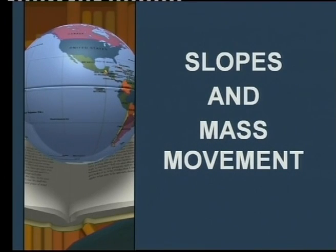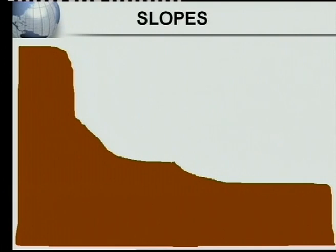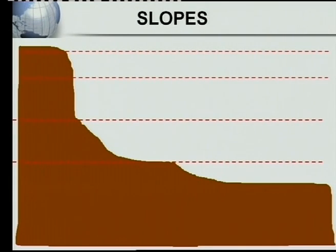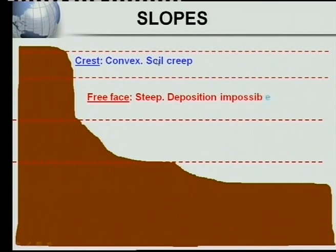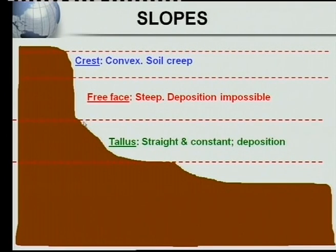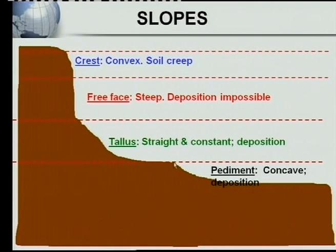Now let's look at slopes and mass movement. A slope can be divided into four different parts. At the very top is the crest, which is convex, and soil creep usually occurs there. Below that is the free face, which is very steep and deposition is impossible there. Then comes the talus, which has a constant straight slope where deposition can occur. Finally, the pediment at the bottom is concave and deposition can also occur there.